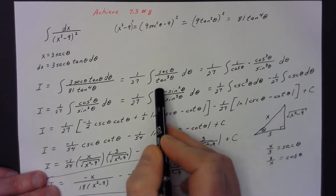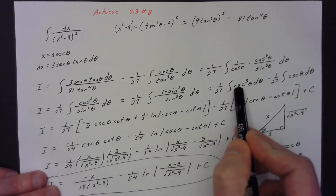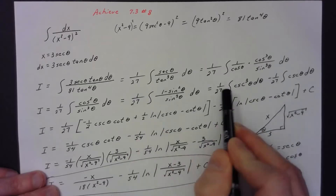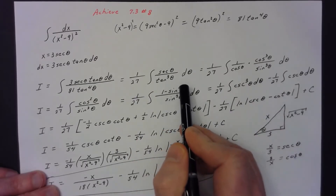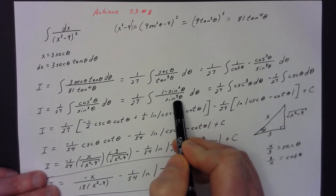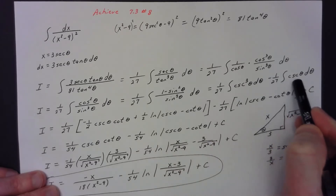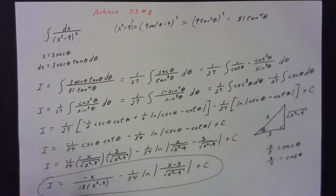Then I was able to break apart my numerator. 1 over sine cubed equals csc³ θ. And then minus a separate integral — both have the 1/27 in front. The second integral is sine² over sine³, which is 1/sin, just csc θ to the first. So now I have the integral of csc³ θ minus the integral of csc θ.